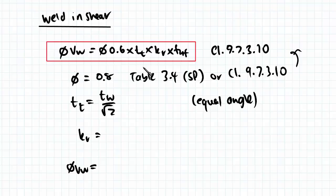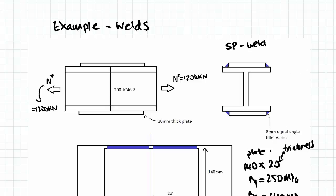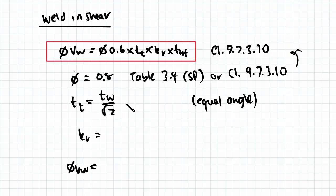We know what our thickness of our weld is. We're using an 8mm equal angle fillet weld. So our TW equals—oh, sorry—our TW equals 8. You divide...